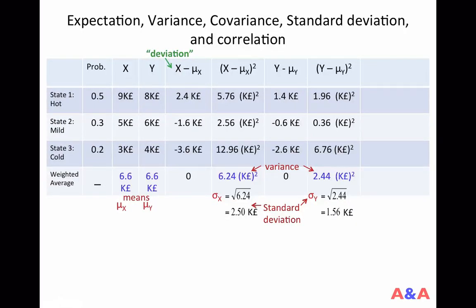Let's move on to covariance and correlation coefficient. If you look at these two random variables carefully — the brewery's sales and creamery's sales — you will notice that these two random variables have similar fate. If the summer is hot, then both businesses do very well. But if the summer is cold, then both businesses do poorly. In this sense, these two random variables have similar tendency. Is there any good measure that captures such linkage or similarity or co-movement between two random variables? There is such a measure, and that's covariance.